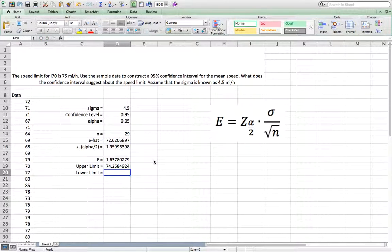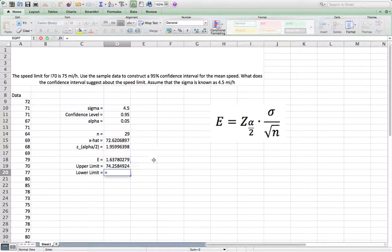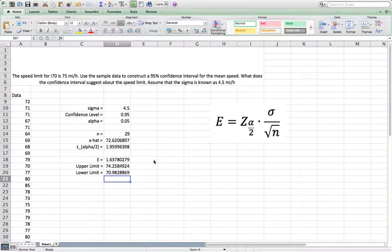Then the lower limit will equal x hat, which is D15 minus the margin of error, which is D18. So that's 70.98.